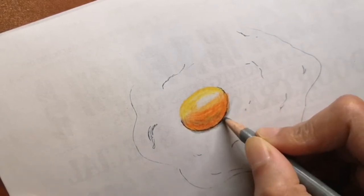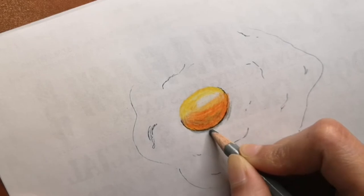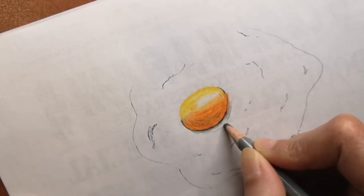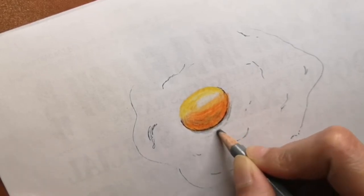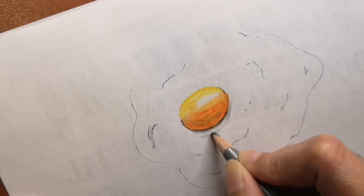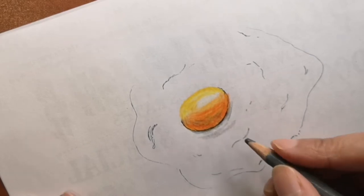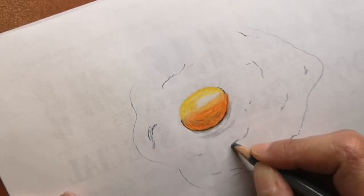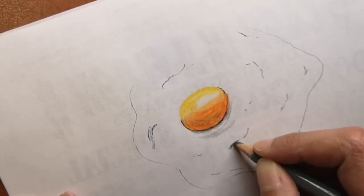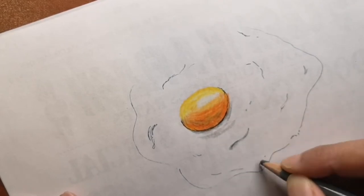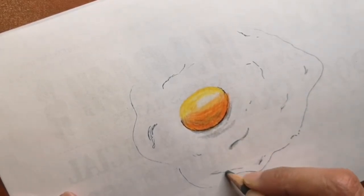Over medium is when the egg is flipped and the yolk is only slightly runny. Over well is when the egg is flipped and the yolk is cooked hard. Those are the terms you can use to ask what kind of egg you like.